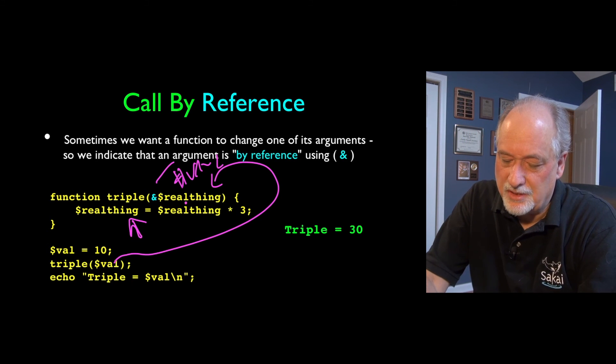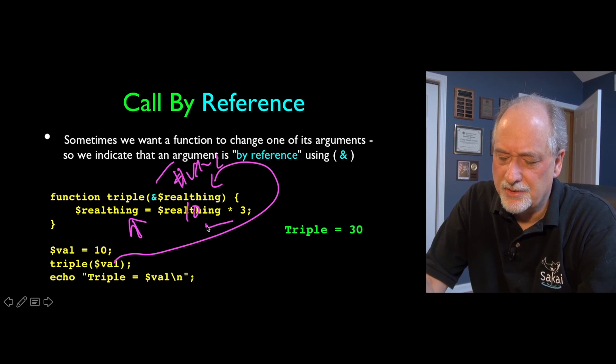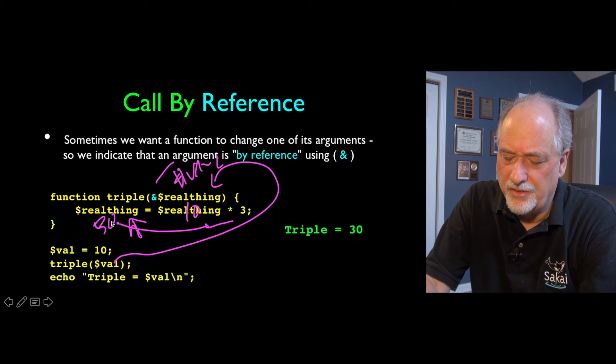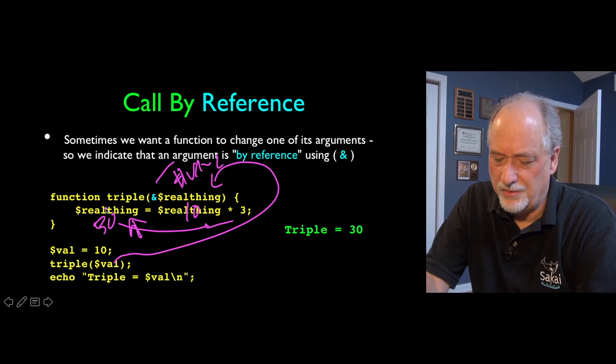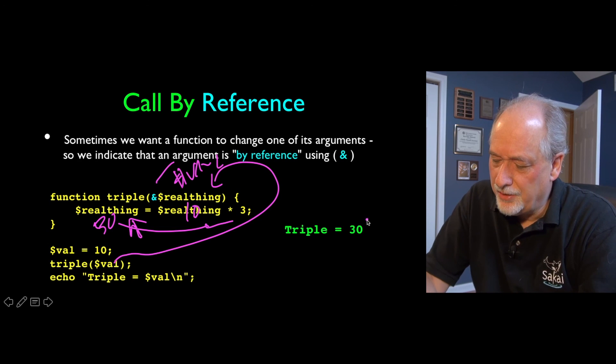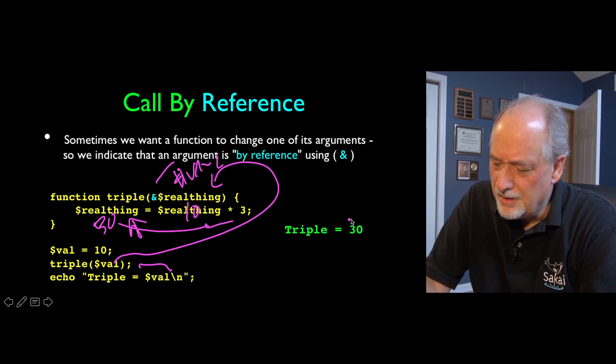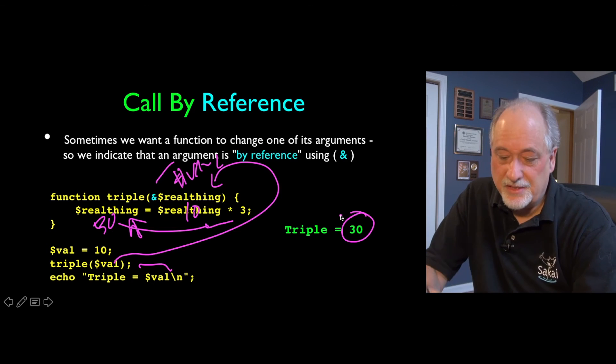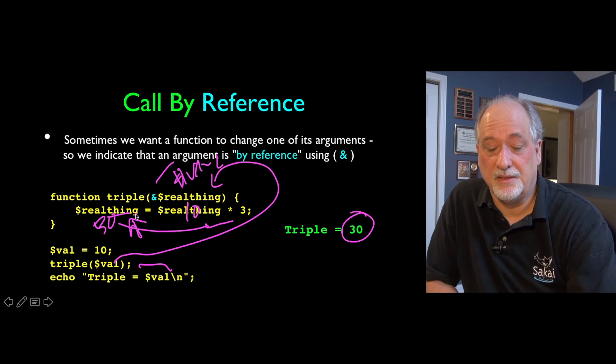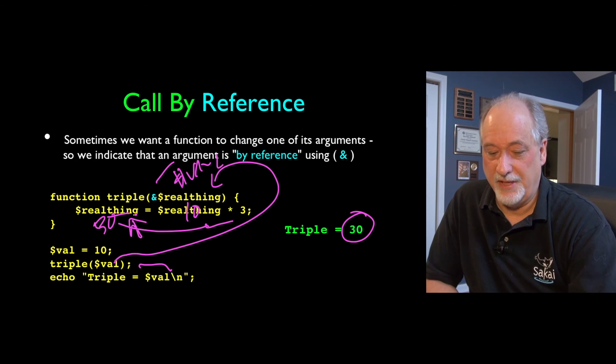So what happens is, of course, this becomes 10 because it is equivalent to dollar val. And then 10 times 3 is 30. 30 goes into real thing. We have no return value, which is totally okay. But then we come back and we notice back here that val has tripled. And that's simply because we ran this assignment statement inside the function. And we said, we're going to mess with that. Give us the actual variable, not a copy of the actual variable.